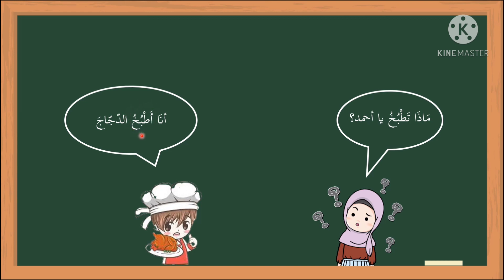Nulahiz kalimah Atbuku — Saya sedang masak. Dhamir di sini adalah huruf Alif. Dhamir kata ganti nama merujuk kepada 'Ana' — Saya. Atbuku — dhamir muttasil lil fi'li. Alif di sini merujuk kepada saya. Ta di sini merujuk kepada awak.